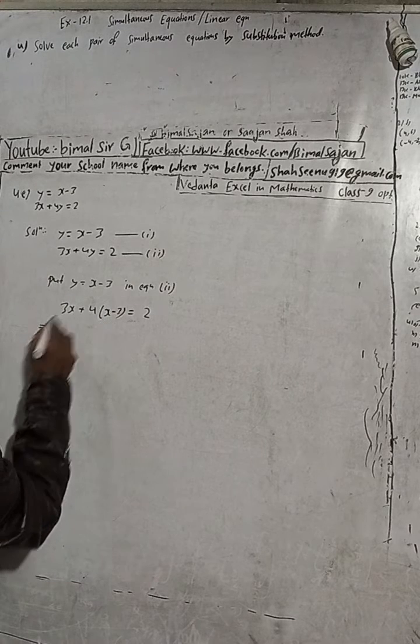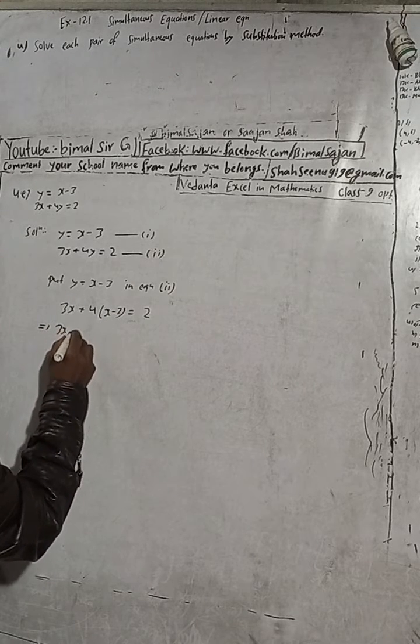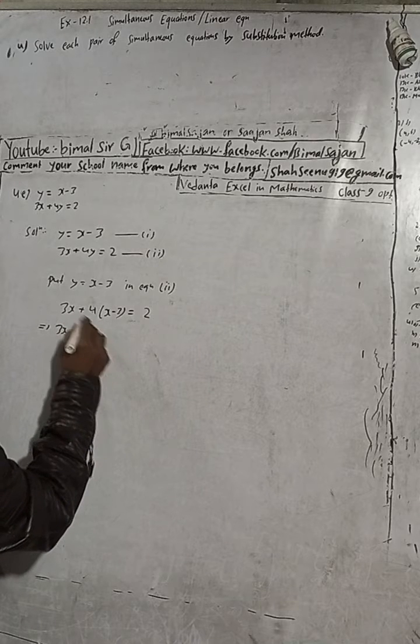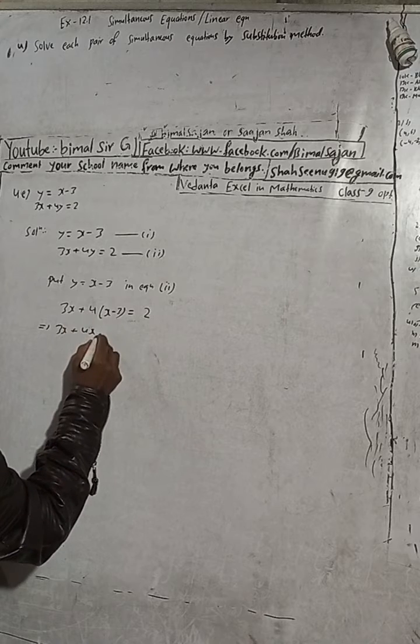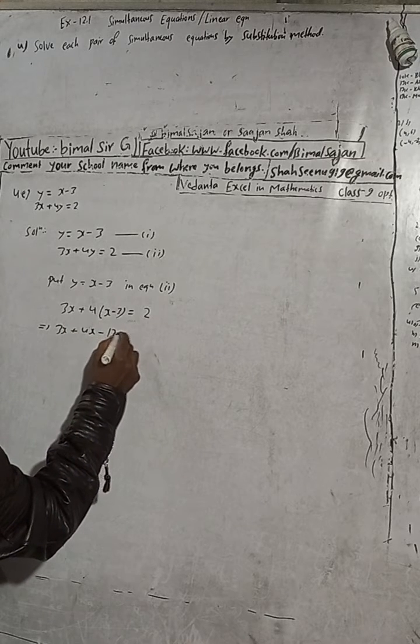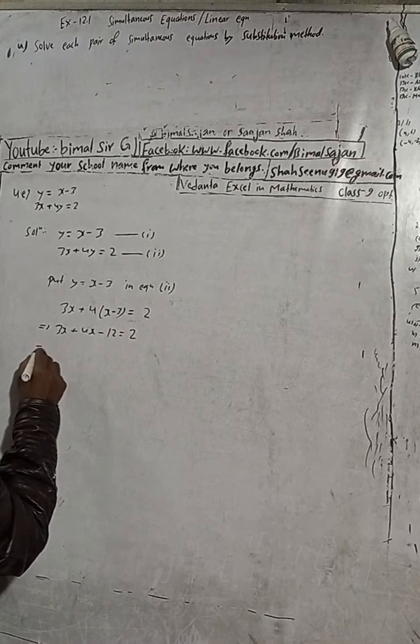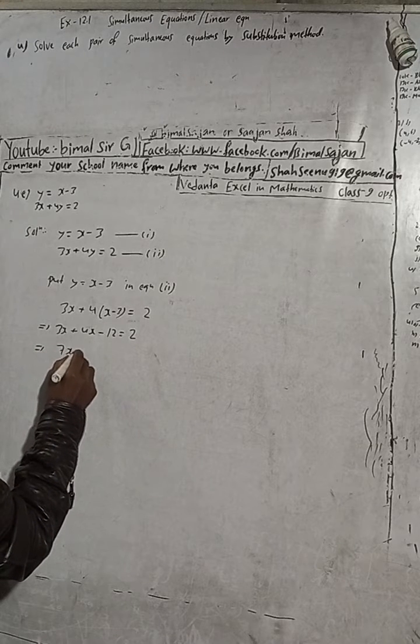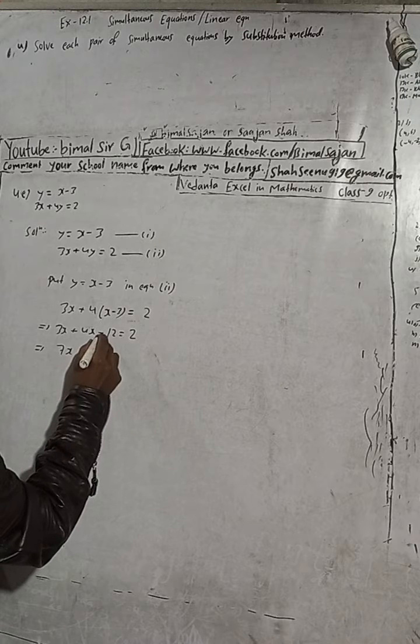Now here is 3x plus 4 into x, 4x. This plus and this minus, plus minus is minus, and 4 times 3. So 3x plus 4x will be 7x is equal to 2 minus 12, that's our plus 12.